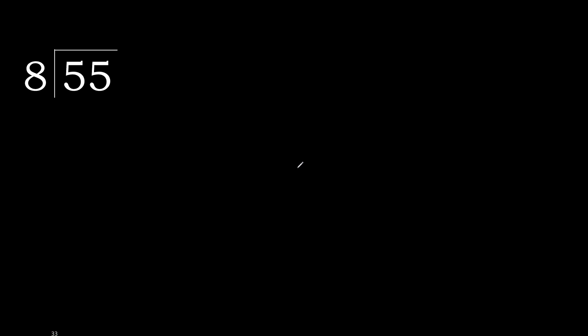55 divided by 8. 5 is less, therefore next. 55 is not less, therefore with 55: 8 multiplied by which number is nearest to 55 but not greater? 8 multiplied by 7 is 56, which is greater.